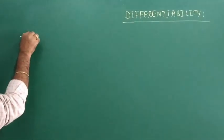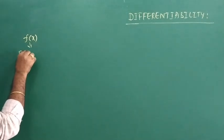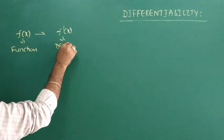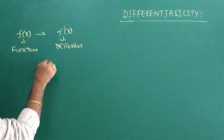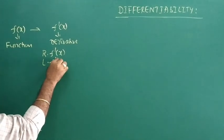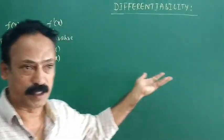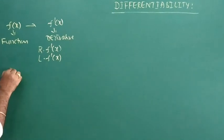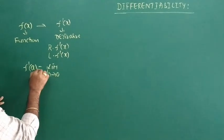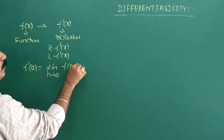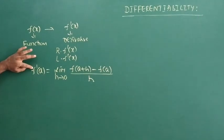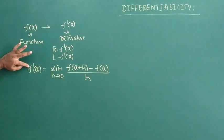f of x is a function. f dash of x is called the derivative. If we write R into f dash, it is called the right-hand derivative. If we write L into f dash, it is the left-hand derivative. The formula is: f dash of x equals limit h tends to 0 of f of x plus h minus f of x, divided by h. This is the formula you studied in first year AP unit.